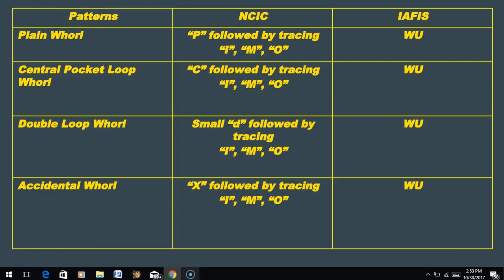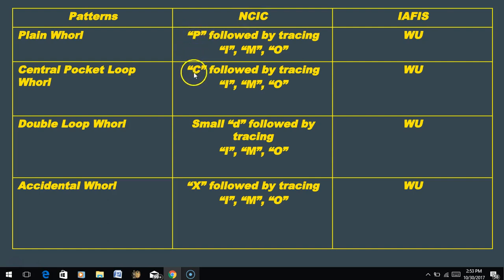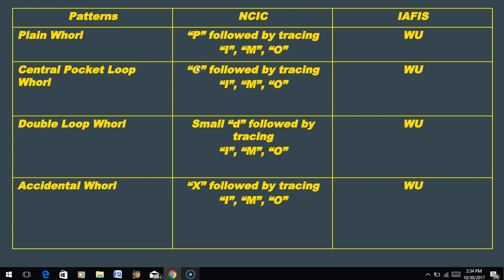What if we have whorls? With AFIS, it's really easy - for any whorl, we simply write WU. It doesn't matter if it's a plain whorl, central pocket whorl, double loop whorl, or accidental whorl - we just write WU, and we don't worry about the type of whorl or tracing. NCIC is more specific: the first character indicates whorl type - P for plain whorl, C for central pocket whorl, lowercase d for double loop whorl, or X for accidental whorl (X instead of A to avoid confusion with arches). The second character is the tracing - so a plain whorl with inner tracing is PI, a central pocket whorl with outer tracing is CO.